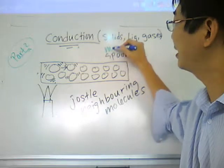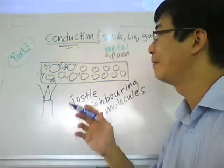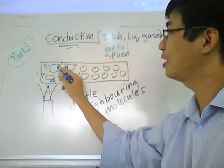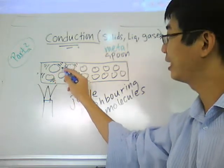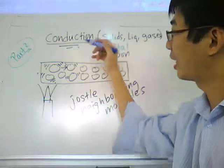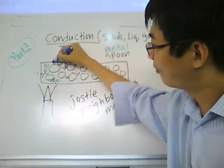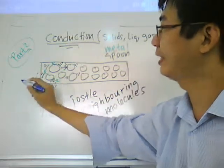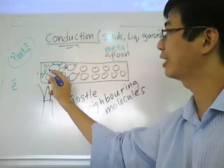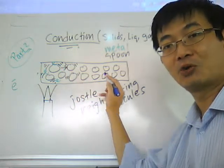So if it's a metal spoon, what is the difference? Besides the molecules vibrating more vigorously and jostling and heating the neighboring particles, we have 3 electrons here, represented by E. In metals, there are mobile electrons that can travel in between the molecules.